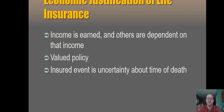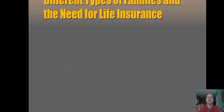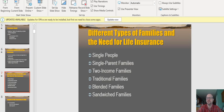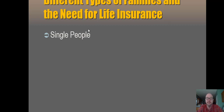What you're really insuring against is uncertainty about the time of death — not whether or not you're going to die, but when that's going to happen. It's going to be different for different types of families. If you're single with no financial dependents, you typically don't have much of a need for life insurance. Maybe if you're really planning ahead, you want to think about final expenses and have a little bit of coverage for that, but you don't have the big source of income reliance that usually drives coverage. If you're a single person with no dependents, you really don't have a life insurance need at this time.